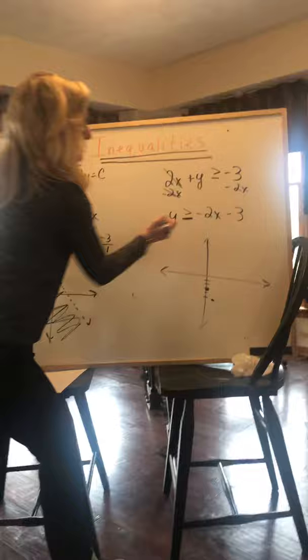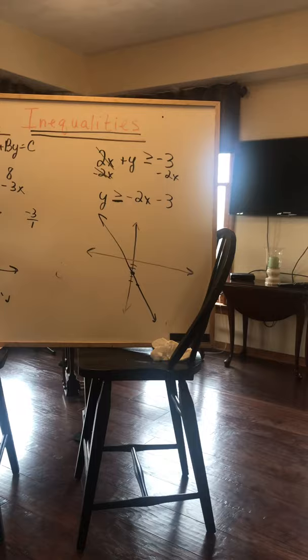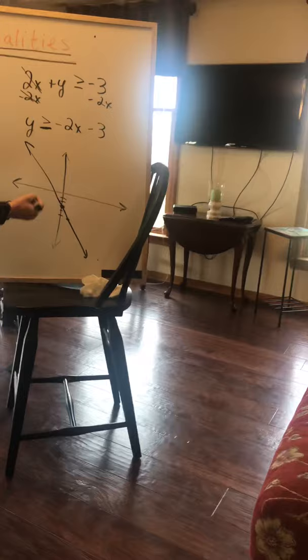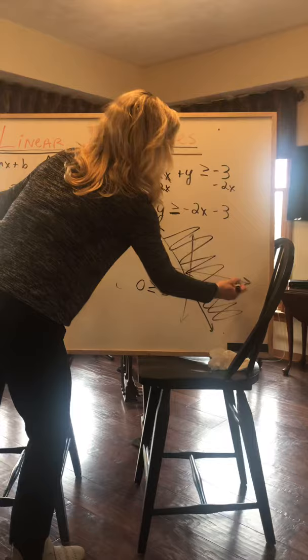Connect the dots, extend the lines. I'm sorry my line is not straight. So I'm going to test 0, 0. Put 0 in for y. Greater than or equal to, 0 times anything is 0 minus 3. Is 0 greater than or equal to negative 3? Yes, that's true. So I shade towards the point I picked.